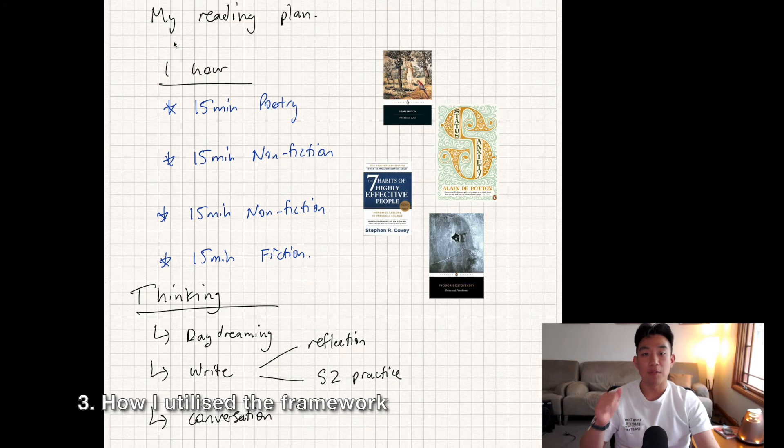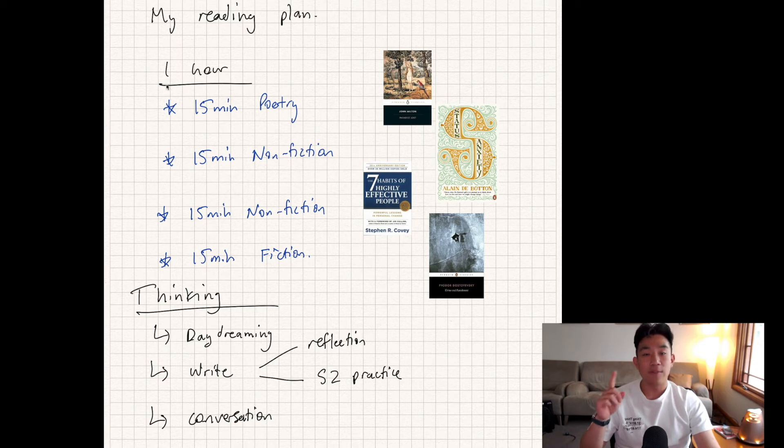Let's look at how I utilized the framework for Section 1. It was divided into two: my reading plan and how I thought about those books. I read for one hour each day. This is broken up into four lots of 15 minutes: 15 minutes of poetry, 30 minutes of non-fiction, and another 15 minutes of fiction.